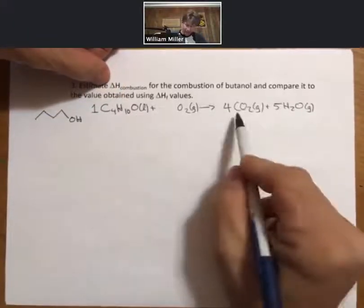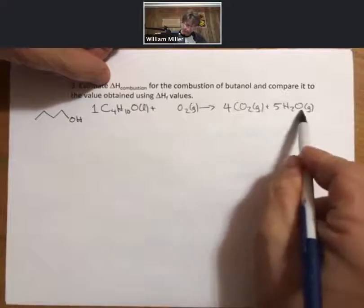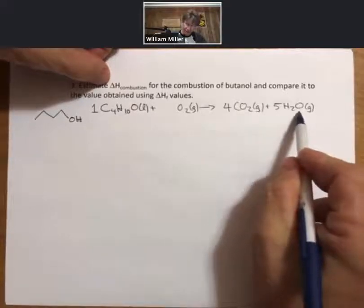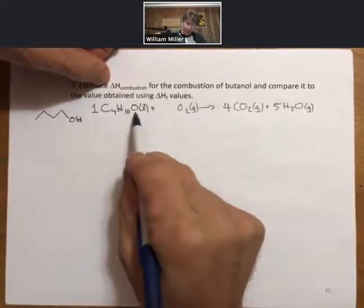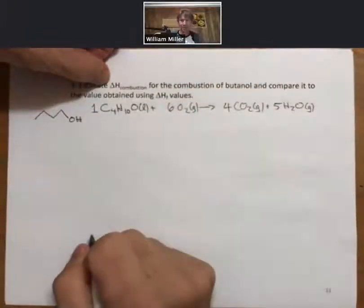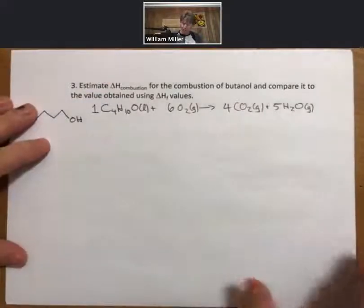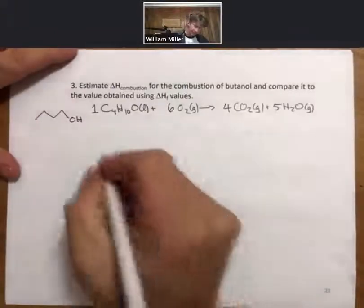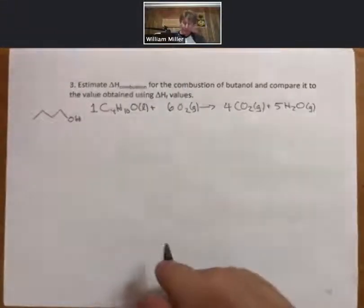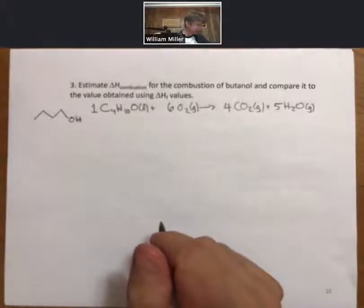From there, I have eight and five is 13 oxygens on the product side. I have one oxygen, so I need 12 more. There has to be a six right there. Just a reminder, we have two pages to do this problem. Now, that should be balanced. Now, let's draw Lewis structures.